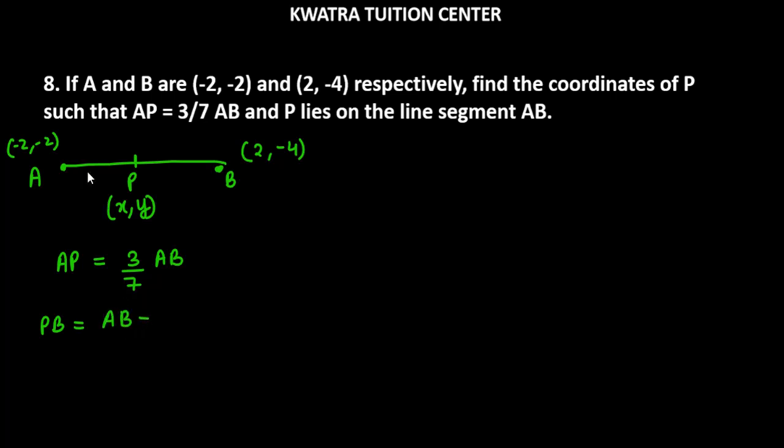We can write AB minus AP. AB is the total length, and from that you subtract AP. So if you want to find PB, you subtract AP. AB as it is, AP's value is 3 over 7 AB. Now what will you do? Subtract this value so you can get PB's ratio. Let's subtract by taking LCM. LCM will be 7 here, so we multiply the first term by 7. It will be 7AB minus 3AB, which equals 4AB over 7.